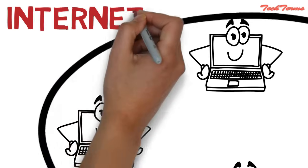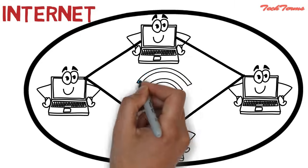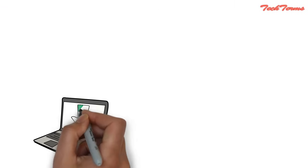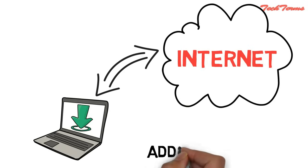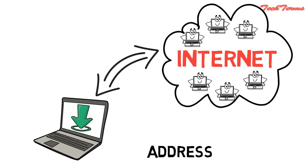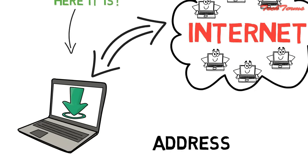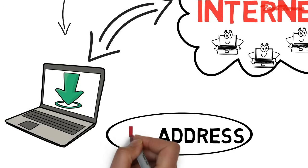Computers on the internet communicate with each other with underground or underwater cables, or wirelessly. If I want to download a file from the internet, then my computer should have an address so that other computers on the internet can find and locate my computer. In internet terms, that address of a computer is called an IP address.